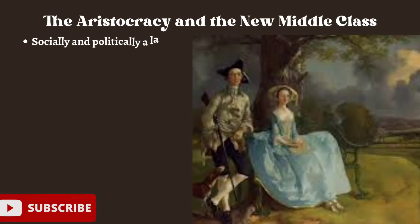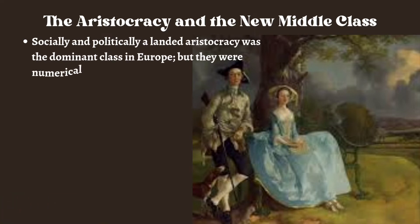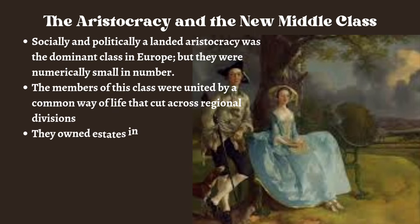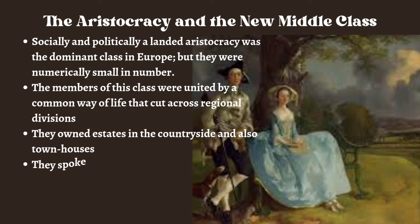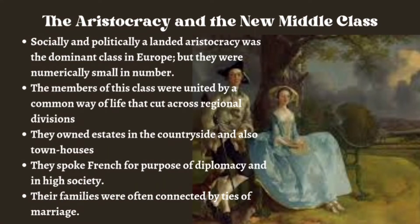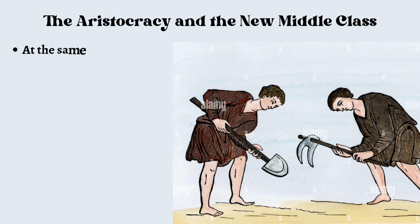The Aristocracy and the New Middle Class. Socially and politically, a landed aristocracy was the dominant class in Europe, but they were numerically small in number. The term aristocracy means ruling class — they were the land-owning ruling class in Europe during the mid 18th century. The members of this class were united by a common way of life that cut across regional divisions. They owned estates in the countryside and also townhouses, and spoke French for purposes of diplomacy. Their families were connected by ties of marriage.